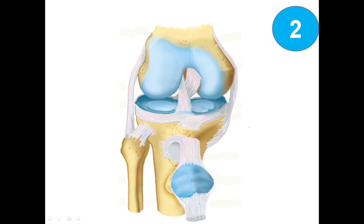The next picture shows the anterior view of the knee joint. Let's talk about the bones first. This is the femur, here we have the tibia, the fibula, and here is the patella. The articular cartilage is the hyaline cartilage seen in several locations.